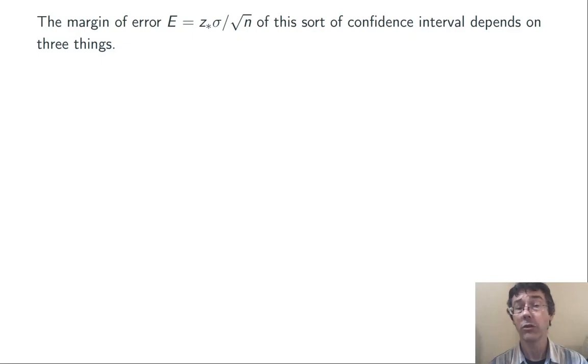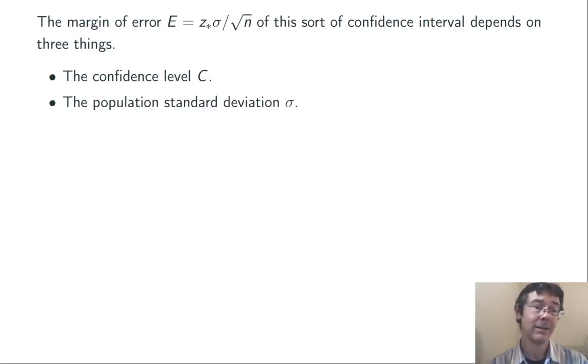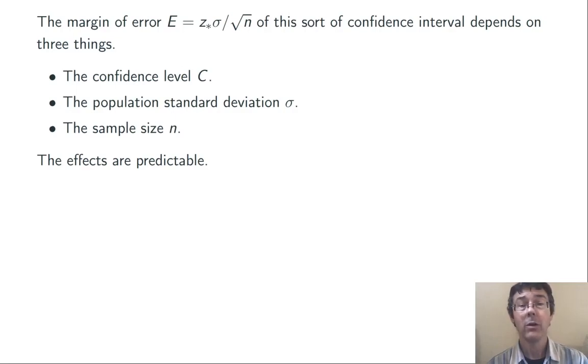Alright, let's talk about the structure of the margin of error a tiny bit. The margin of error has the form z*σ/√n. So there's three ingredients that are going into that. First of all is the z*, or to say it slightly differently, the confidence level C, because those things go hand in hand. Second of all is the spread in the population, the variability there, so the standard deviation σ. And finally, the third ingredient is the sample size n. Now, if we change any one of those three things, we're going to get a very predictable change in the margin of error.